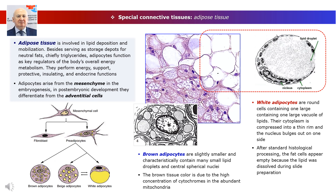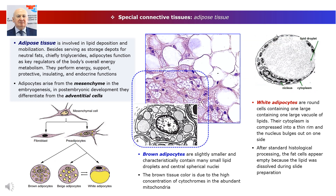Adipocytes are large round cells containing one large vacuole of lipids; their cytoplasm is compressed into a thin rim and the nucleus bulges out on one side. After standard histological processing, the fat cells appear empty because the lipid was dissolved during slide preparation. White adipocytes are organized in groups called lobules, separated by septa of loose connective tissue conducting blood vessels and nerves. Brown adipocytes are slightly smaller and characteristically contain many small lipid droplets and central spherical nuclei. The brown tissue color is due to the high concentration of cytochromes in the abundant mitochondria, and each cell is approached by three to five blood capillaries.